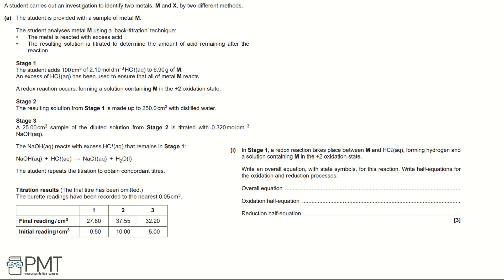Starting with the overall equation: we have M and HCl reacting to form hydrogen and a solution with M in the 2+ oxidation state. The reactants are M as a solid, and hydrochloric acid which is aqueous. The products are hydrogen gas and MCl₂ as an aqueous solution. Balancing requires two hydrochloric acid molecules.